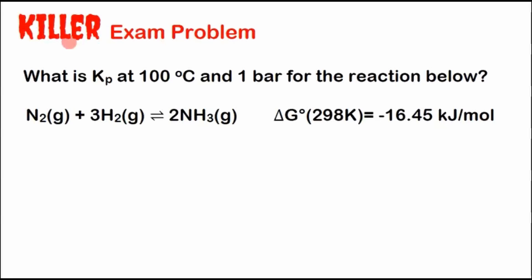Alright, my friends, we're going to solve a killer exam problem that involves the Van't Hoff equation. What is the equilibrium constant at 100 degrees Celsius and 1 bar for the reaction below? It's a short problem with a short equation, but we're not given much information. We have the reaction Gibbs energy at 298 Kelvin, and we want to know what the equilibrium constant is.